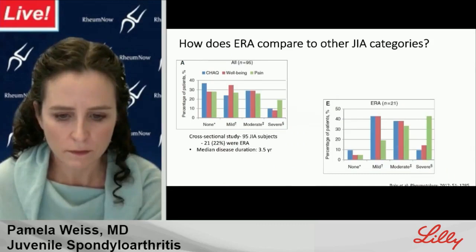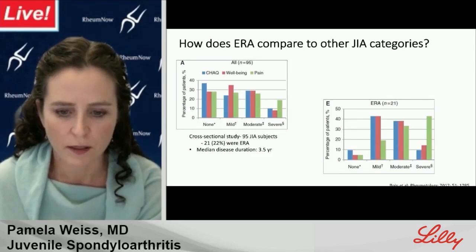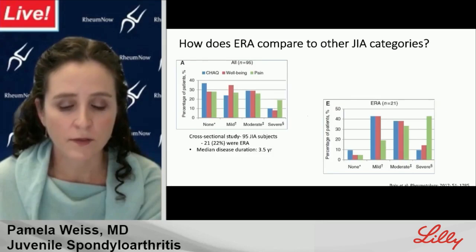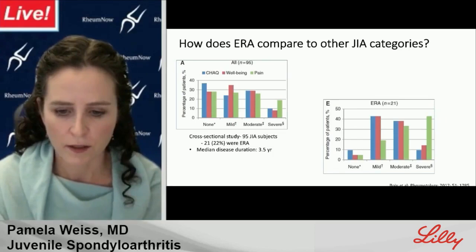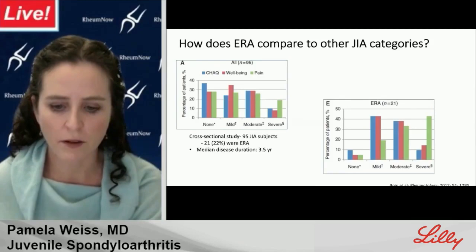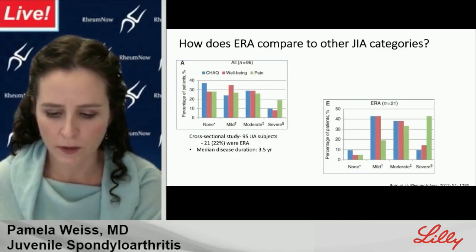Data from a cross-sectional study of 95 subjects — 21 of whom had ERA, with median disease duration of 3.5 years — showed that half of ERA patients had moderate to severe functional impairment, moderate to severe impaired well-being, and 43% reported severe pain. Outcomes were measured by the CHAQ (akin to the HAQ), well-being, and pain scores. So these kids need help, and we are doing a so-so job at the moment.